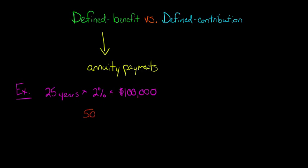So what does that mean? That means that when this employee retires, there will be an annuity payment from the company to the employee of $50,000 a year for the rest of the employee's life.